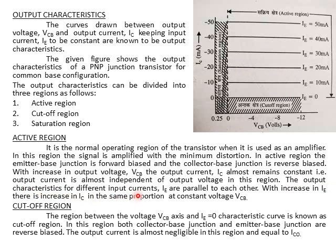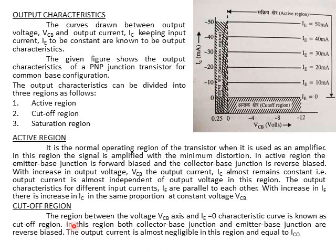The output characteristics for different input currents IE are parallel to each other and also parallel to the VCB axis. With increase in IE, there is an increase in IC in the same proportion at constant voltage VCB. For example, at VCB = -4V, if IE = 0, 10, 20, or 30 mA, the value of IC also increases in approximately the same proportion.